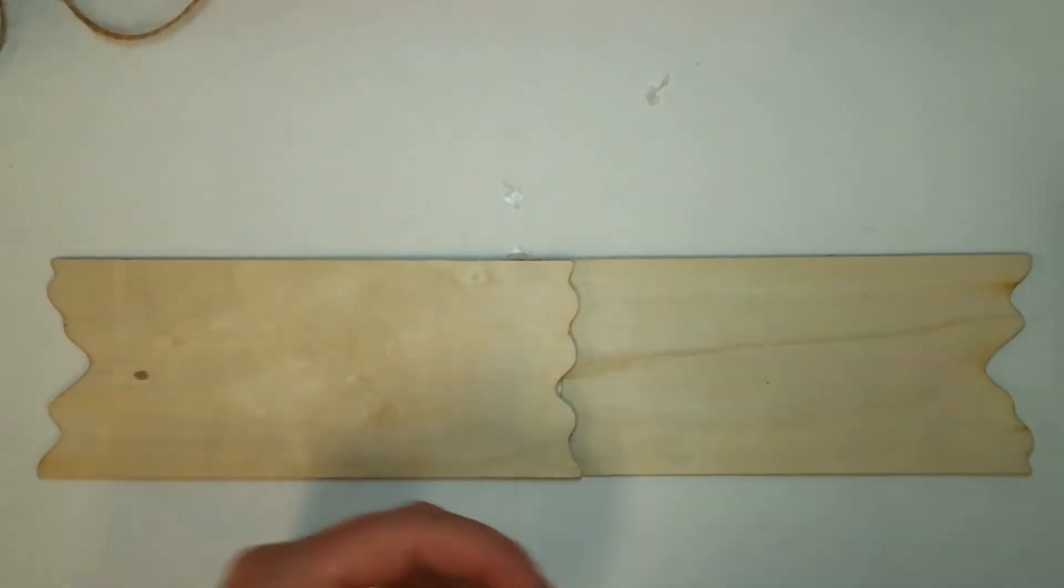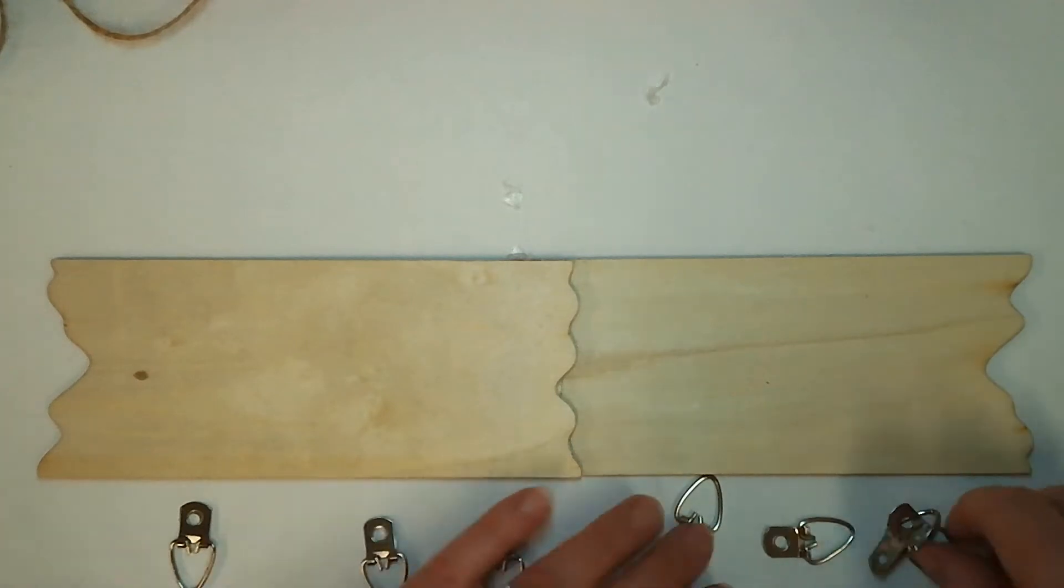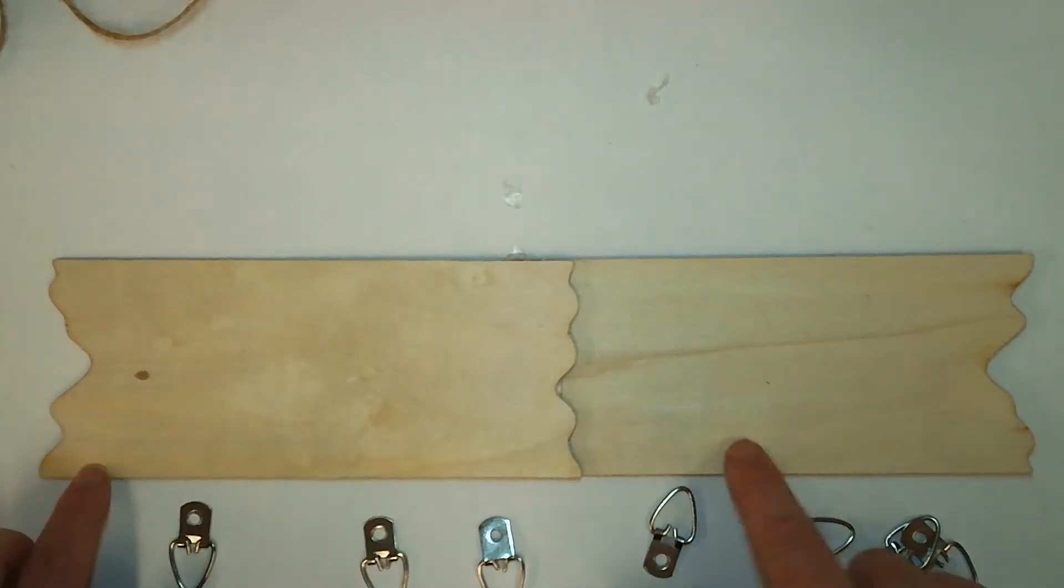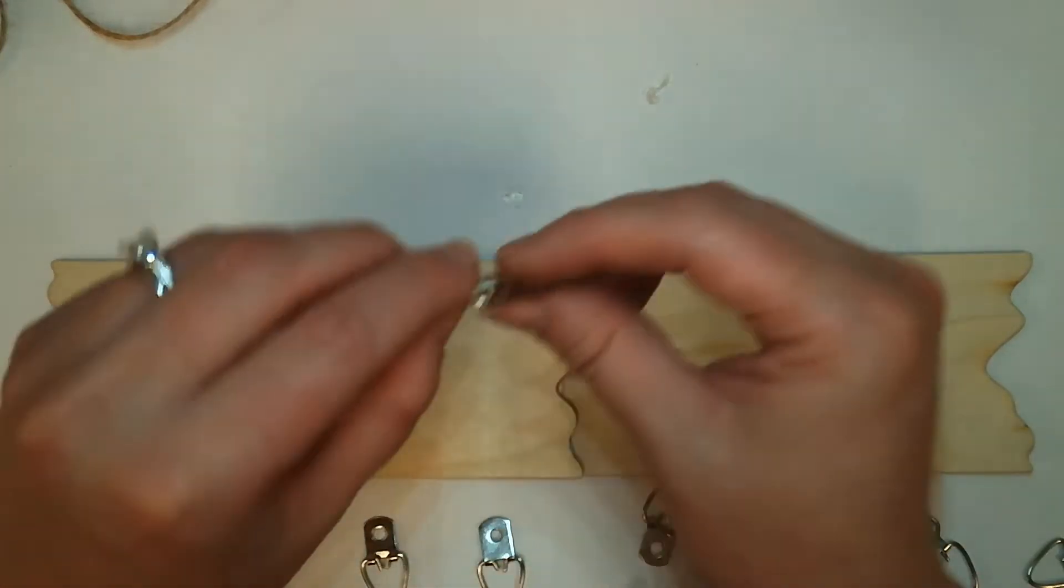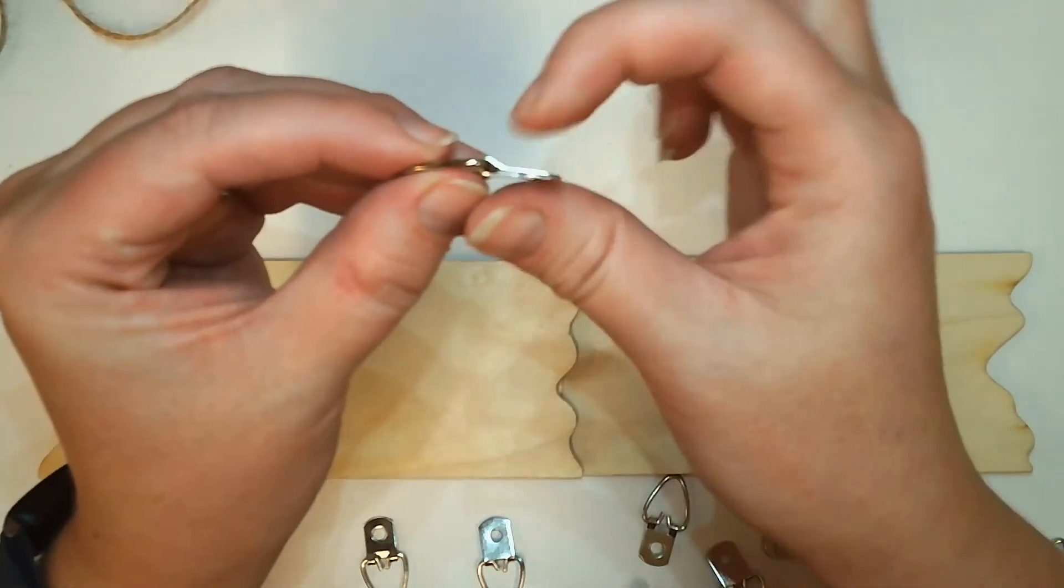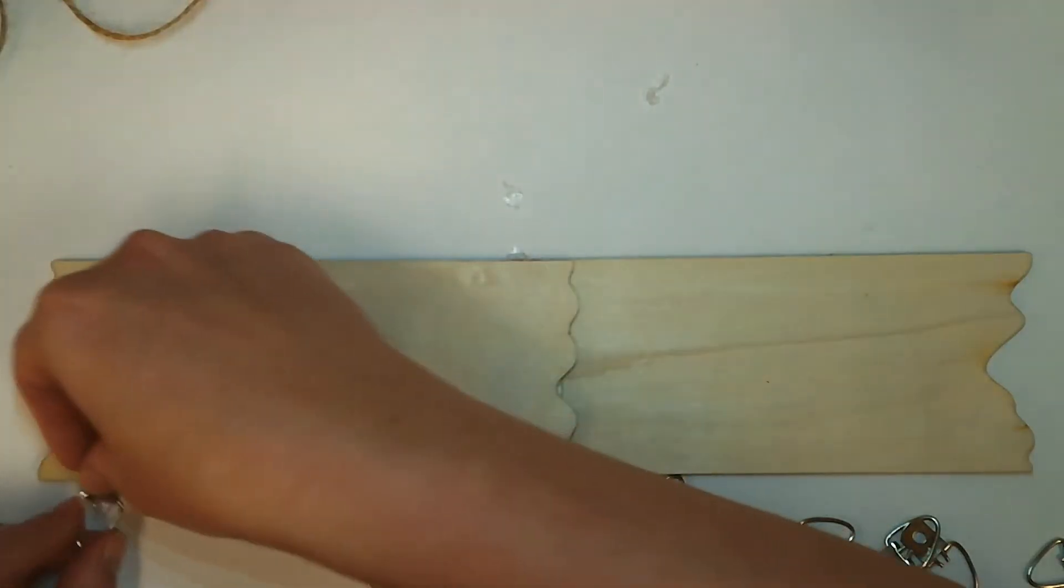So next you're going to take your D-rings and you're gonna get 12 of them and you're gonna lay 12 down across the bottom. So you want to make sure they're fairly evenly spaced and you can see that on these rings there is one side that has a little indentation. So go ahead and that's the side you're gonna want to glue down.